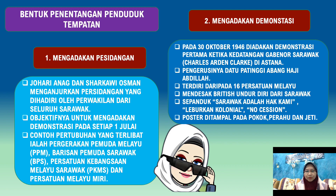Demonstrasi diadakan pada 30 Oktober 1946, dipengerusikan oleh Datu Patinggi Abang Haji Abdillah, yang terdiri daripada 16 buah persatuan Melayu yang mendesak British supaya mengundurkan diri dari Sarawak. Terdapat sepanduk tertulis 'Sarawak adalah hak kami', 'Leburkan koloni' dan 'No Cession'. Terdapat juga poster ditampal pada pokok, perahu dan jeti.